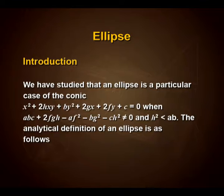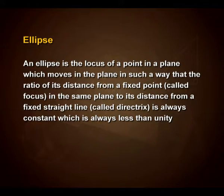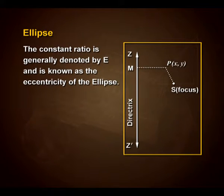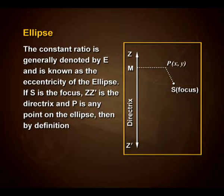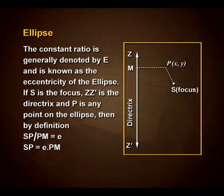The analytical definition of an ellipse is as follows: an ellipse is the locus of a point in a plane which moves such that the ratio of its distance from a fixed point called focus to its distance from a fixed straight line called directrix is always constant and less than unity. This constant ratio is denoted by E and is known as the eccentricity. If S is the focus, ZZ' is the directrix, and P is any point on the ellipse, then SP/PM = E, giving SP = E·PM.